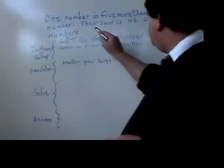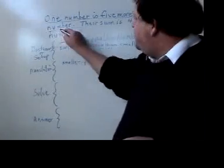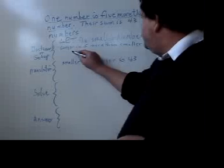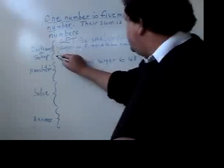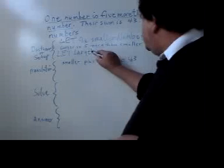Now translating this part: one number is five more than another number. So larger is five more than smaller. But when it says five more than a number, you have to translate it in reverse.